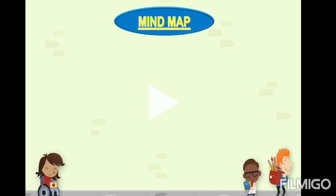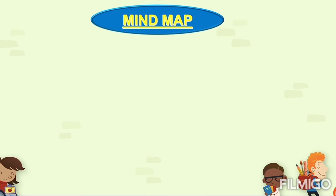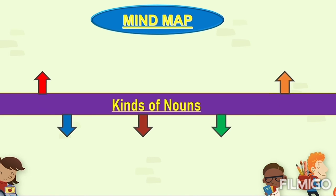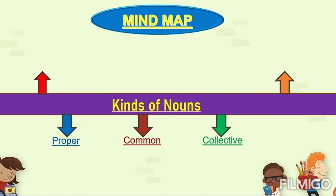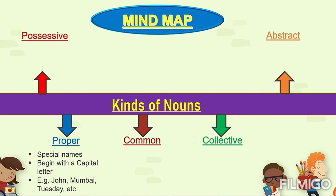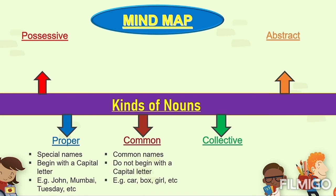Let's see the mind map — kinds of nouns. Proper noun: it indicates the special names of a noun and begins with a capital letter. Examples: John, Mumbai, Tuesday. Common noun: it indicates the common names of a noun and does not begin with a capital letter.